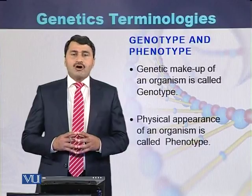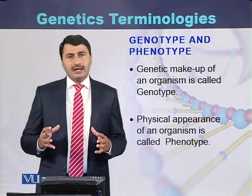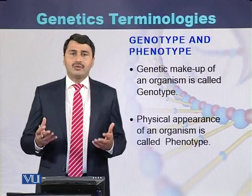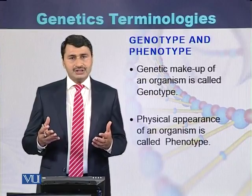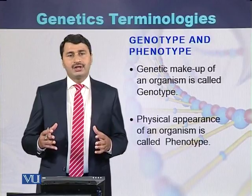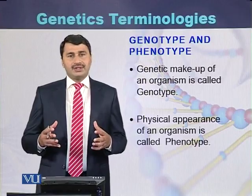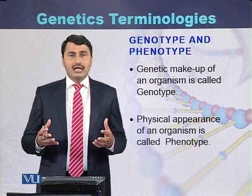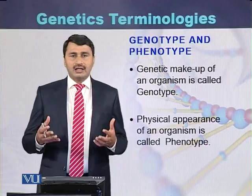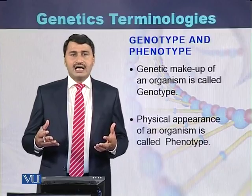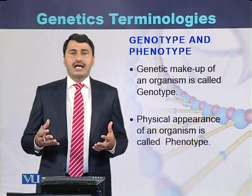What is the meaning of genotype and phenotype? Genotype is the genetic makeup of an organism, like the number of chromosomes, the number of genes, or the sequence of genes in a particular organism. While the physical appearance of an individual — like height, skin color, or eye color — is called the phenotype of that individual.